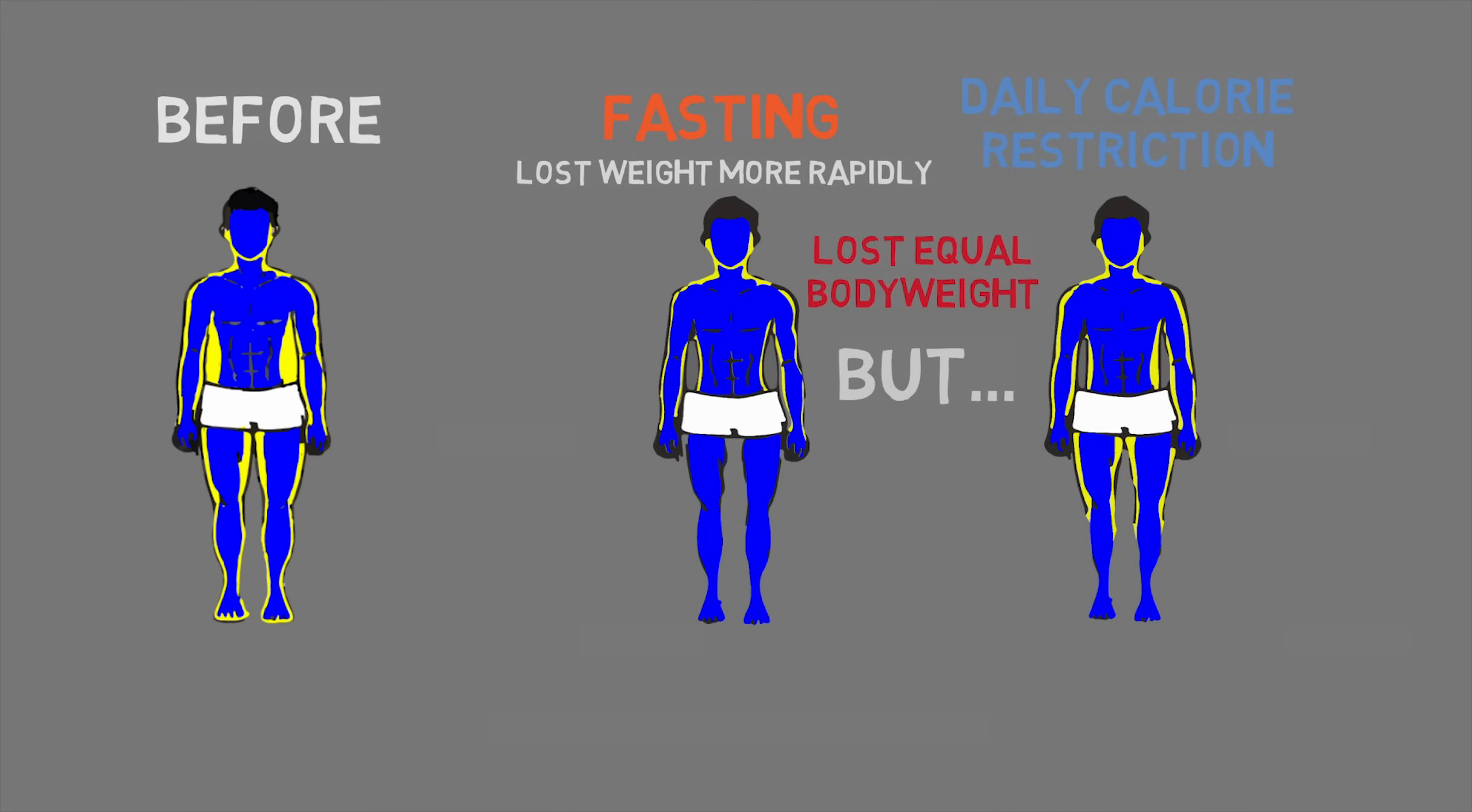Doesn't sound so good for fasting, right? Well, hold on, because everything changed when they took a deeper look and focused not just on body weight loss, but on what kind of weight they lost. During the daily calorie restriction diets, the body weight participants lost comprised on average 75% fat and 25% lean mass. Whereas when you look at the groups who lost their weight through periodic fasting, they might have lost the same amount of body weight, but the ratio was different. On average, 90% of what they lost was fat and only 10% was lean mass.